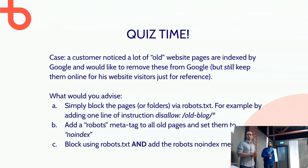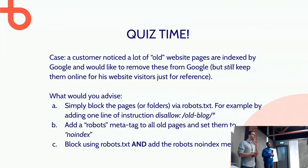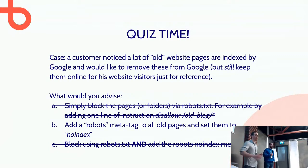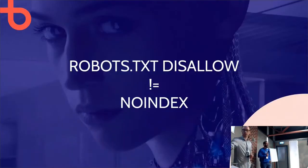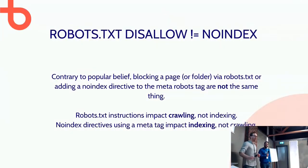Option A: block the pages or entire subfolders using robots.txt. Option B: add a robots meta tag with a noindex instruction. Option C: add a noindex meta tag AND block it in robots.txt. Most people chose C as the right answer, but sadly it's not. This is a perfect segue to our next section: robots.txt disallow is not the same as noindex.